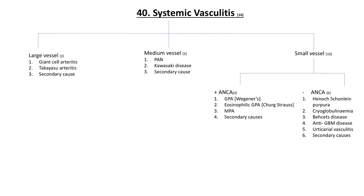ANCA-positive small vessel vasculitides include GPA — granulomatosis with polyangiitis, previously called Wegener's — and eosinophilic GPA, previously called Churg-Strauss syndrome, as well as microscopic polyangiitis. To a certain extent, these can cause hepatopulmonary syndromes, and there are secondary causes as well.